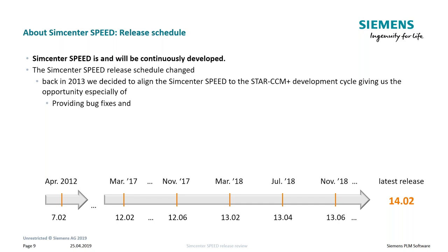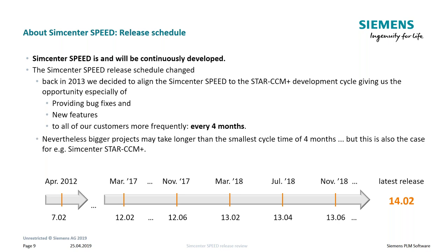Why are we releasing three times a year? Because we would like to put in bug fixes as quickly as possible and also implement new features. If features are small, they can be developed from one cycle to the next. For bigger projects, development may cover three or four cycles running in the background. Once a feature is ready and QA gives the green light, it goes out with the next possible release.